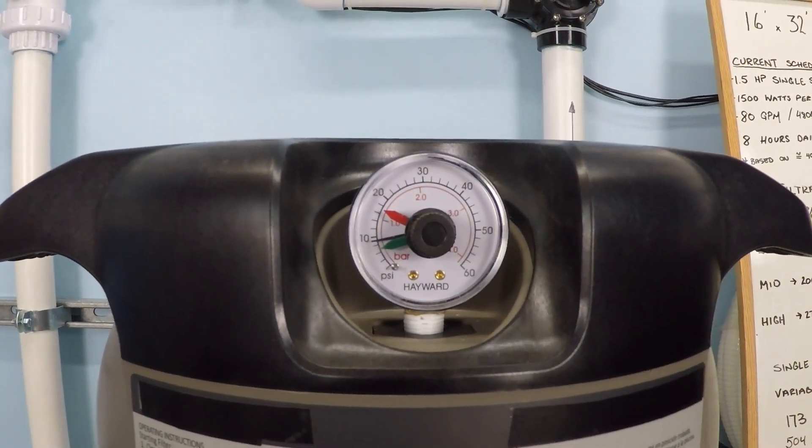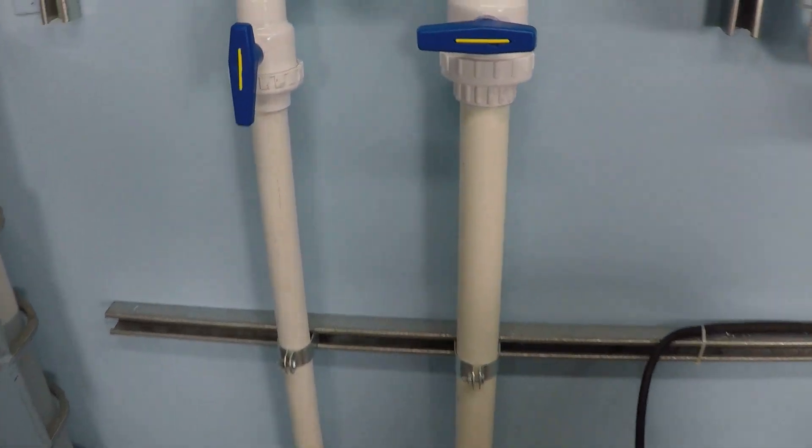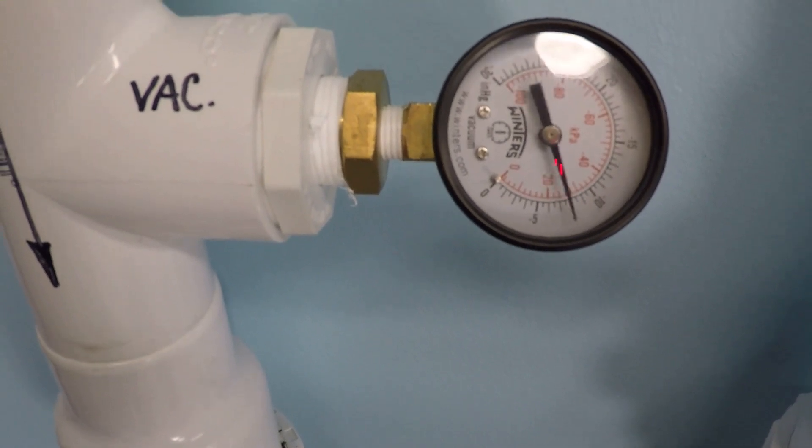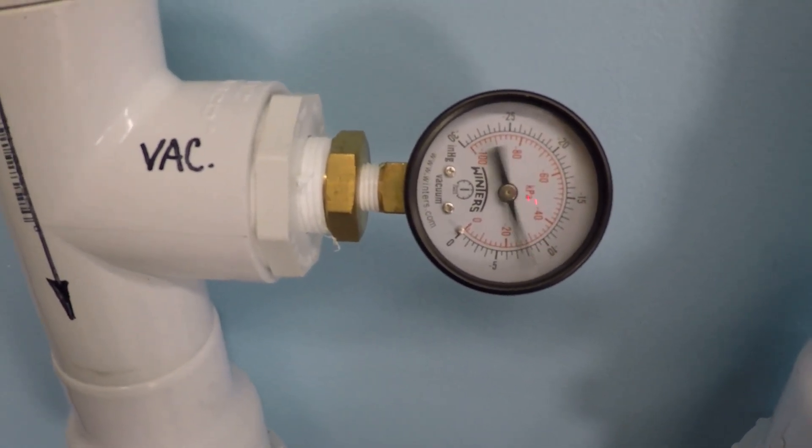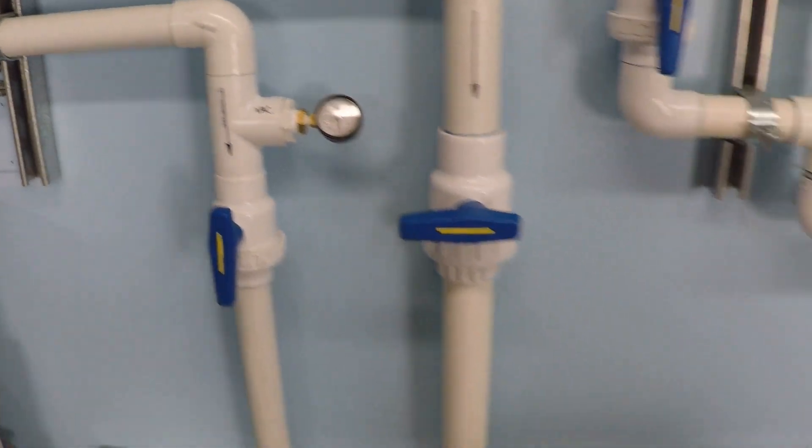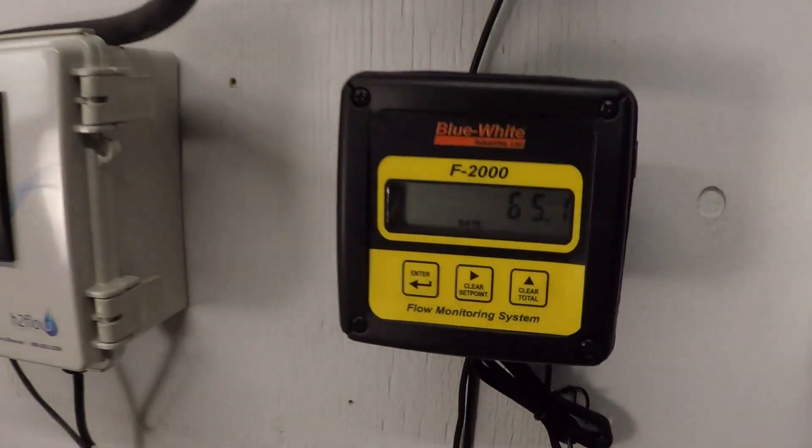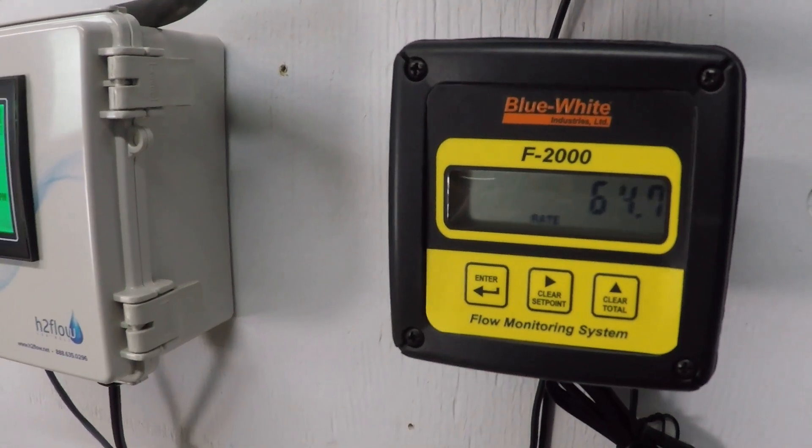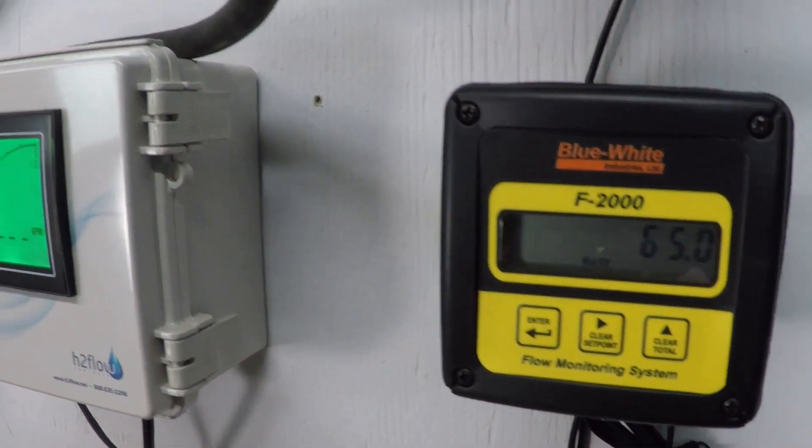It's about 9.5 PSI. We have a vacuum gauge installed here. That's obviously some fluctuations there, but that's about 7.5 inches of mercury. Getting back to the flow rate here, 65 gallons per minute is what we're looking for. It's just about there, 65.